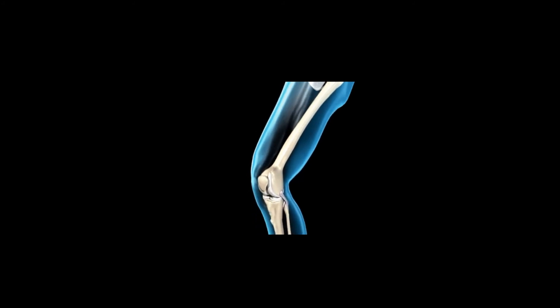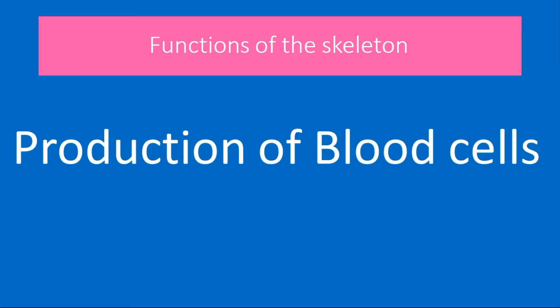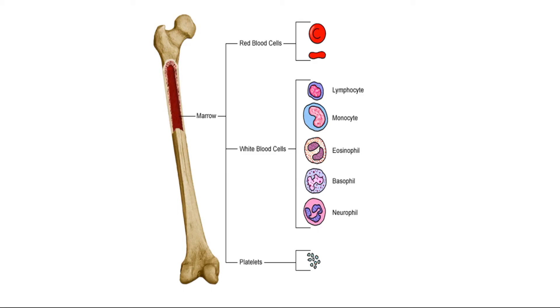The skeleton also allows movement. With the aid of muscles and joints, the skeleton can act as levers providing movement. The skeleton also produces our blood cells. The interior of our bones, and in particular our long bones, is called the marrow. The marrow functions to produce our red blood cells, white blood cells and platelets.